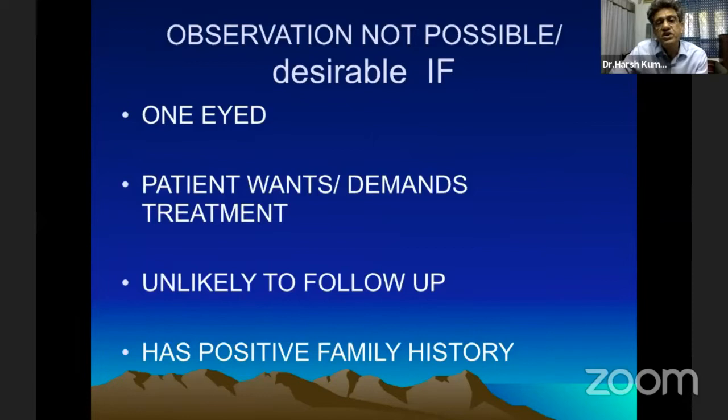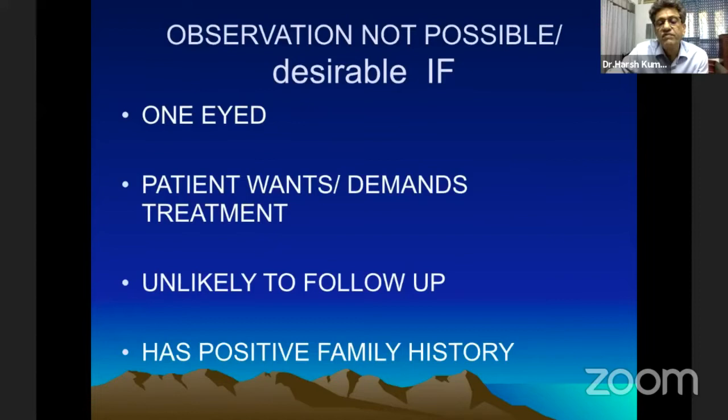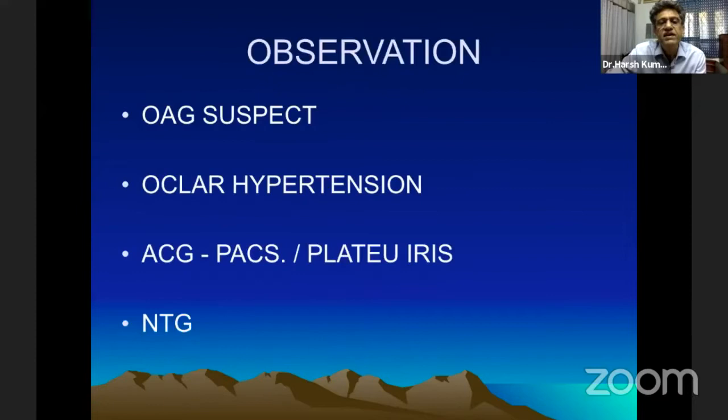Observation could be a tricky part if the patient is one-eyed, if the patient wants and demands to be treated, when they are unlikely to follow up, or when there is a positive family history. In family history, you have to be very careful — many times patients say family history is positive, but when you check the records you realize there is only ocular hypertension or nothing much. However, if there is a family member who has gone blind, in that case you have to be very, very aggressive.